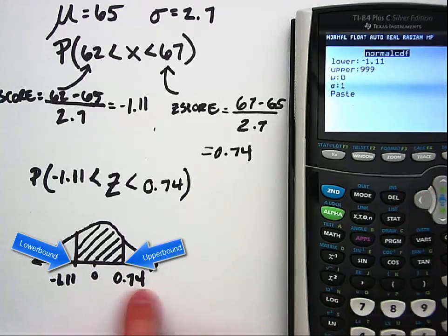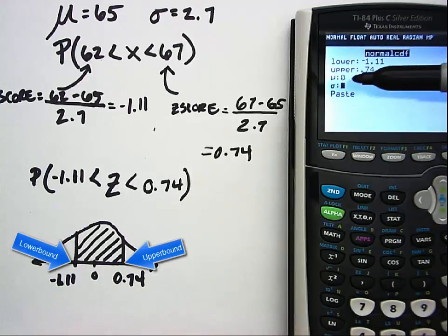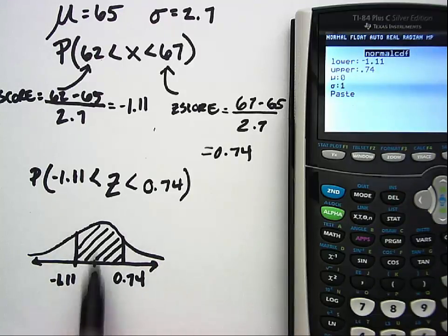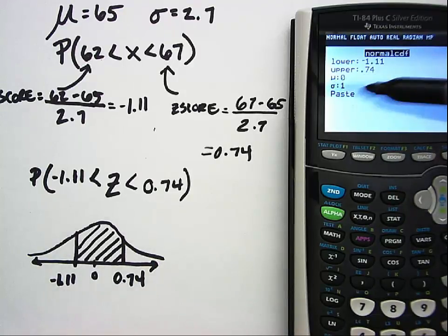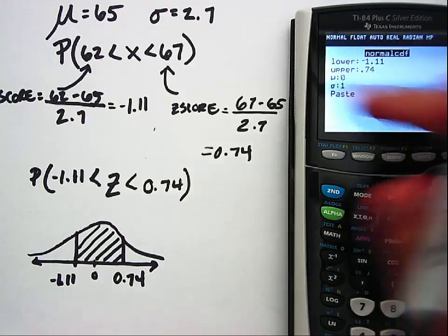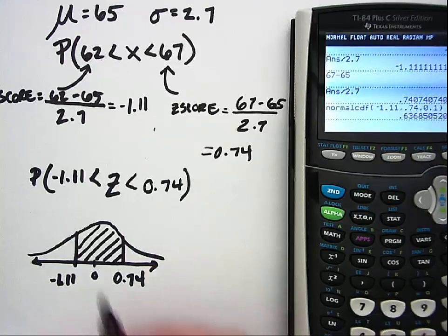Now remember because we're dealing with the standardized curve, we're going to leave mu as zero because that's the standardized value of mu, and sigma is 1 again because that's the standardized value of sigma. So we'll paste and then we go out to our main window, push enter again, and we see that the area that we've highlighted here is equal to 0.639.